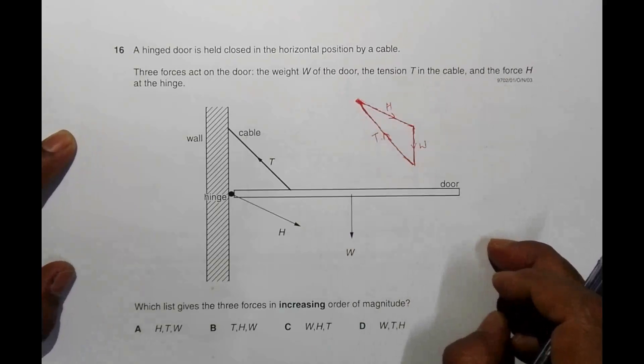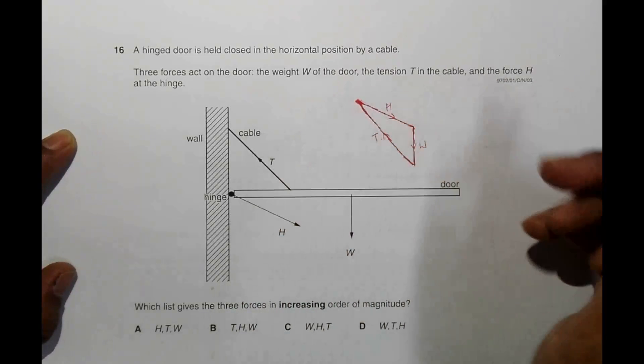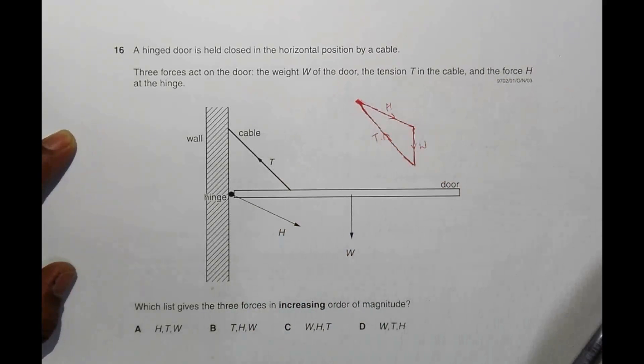This H is parallel to like this, and this T parallel to like this. So what I have done is I have drawn these vectors and tried to complete a rectangle. Try to complete a rectangle.